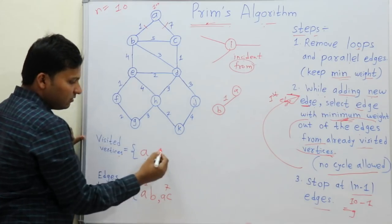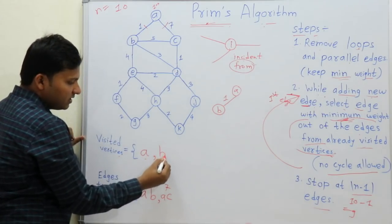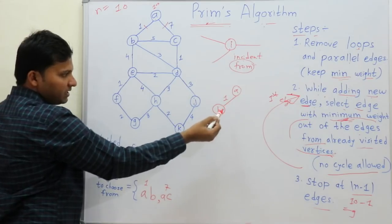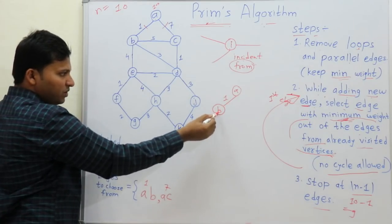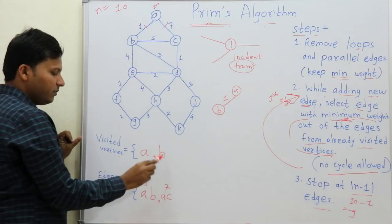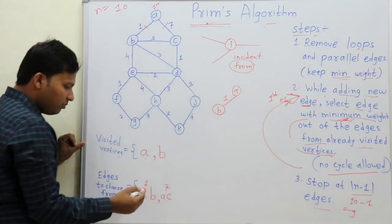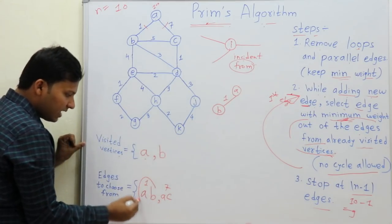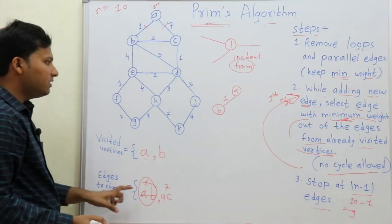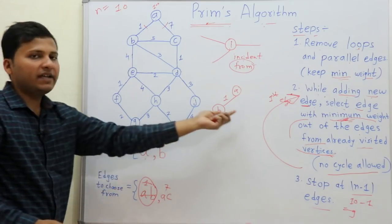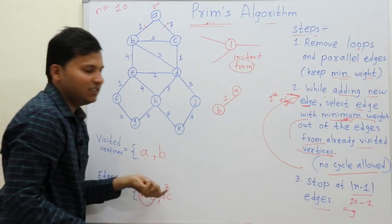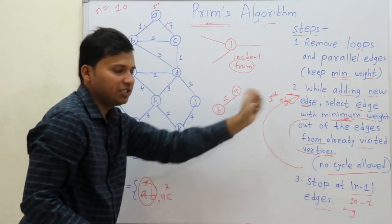As edge AB is taken, B is added to the visited vertices set because AB makes vertex B a visited vertex. Edge AB is cancelled from the candidate set because it is now added to the spanning tree. So this is the first iteration.